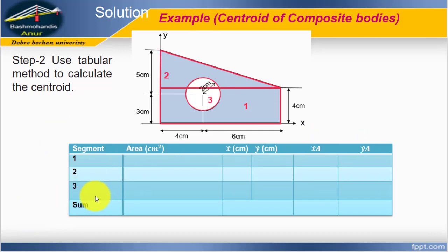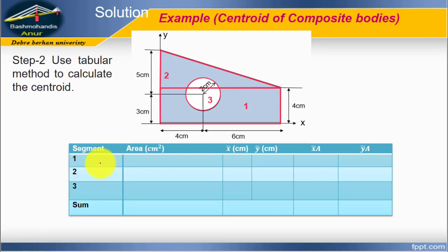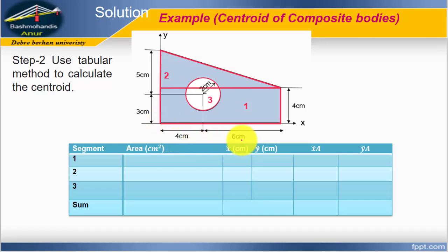Let's start the calculation of area for Shape 1. Shape 1 is a rectangle. The area of any rectangle is base times height. The base is 4 cm plus 6 cm, which equals 10 cm. The height is 4 cm. Therefore, the area for Shape 1 equals 10 times 4, which equals 40 cm².